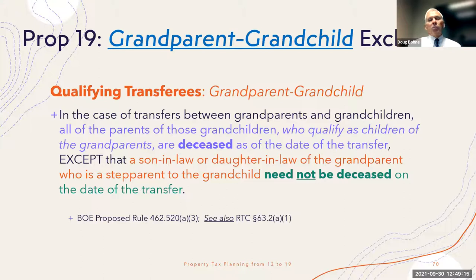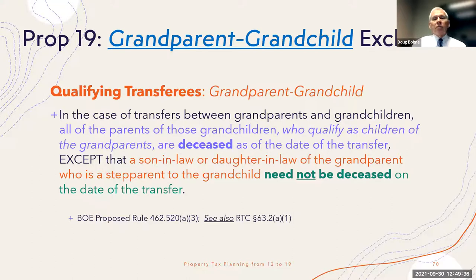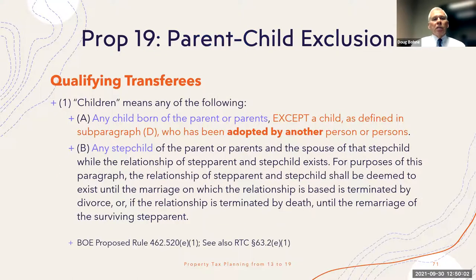For qualifying transferees between grandparents and grandchild: the grandparents can transfer if the parents of the grandchildren — meaning the grandparents' children — are deceased. There is an exception for a son-in-law or daughter-in-law of the grandparent who is a step-parent of the grandchild — they need not be deceased. Adoptions are also addressed: an adopted child would qualify, but they must have been adopted before reaching age 18. So you cannot adopt a 55-year-old friend and take advantage of the parent-child exclusion. Even foster children can qualify. The definition of who qualifies as a child is fairly expansive.